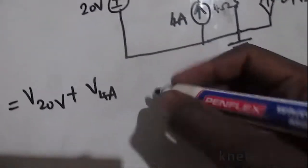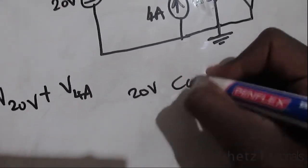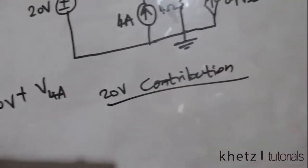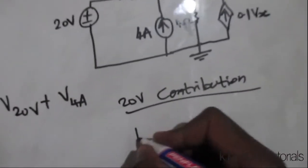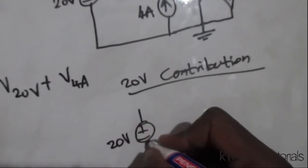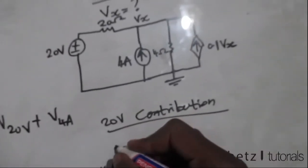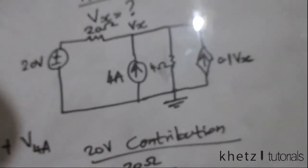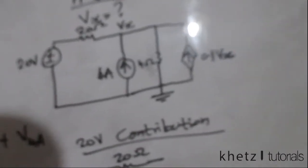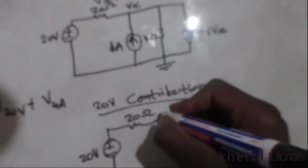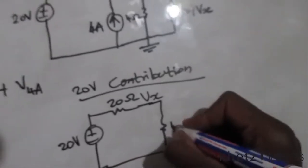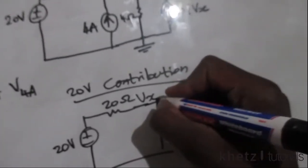Let's first find the 20-volt contribution. We leave the 20-volt source where it is and remove any other independent sources in the circuit. The only other independent source is the 4 amperes, so we remove that. Removing it leaves an open circuit at that point, and the rest of the circuit will have a 4-ohm resistor and the remaining elements.